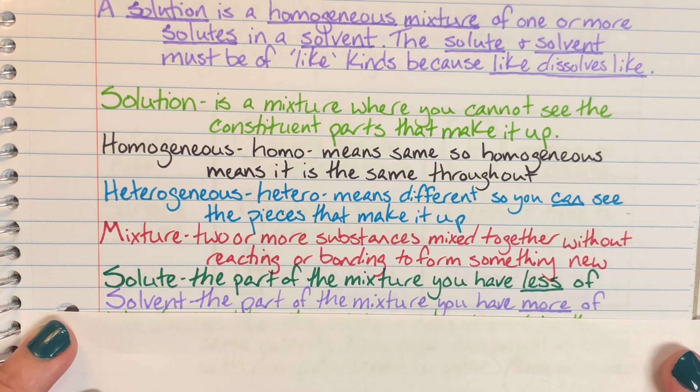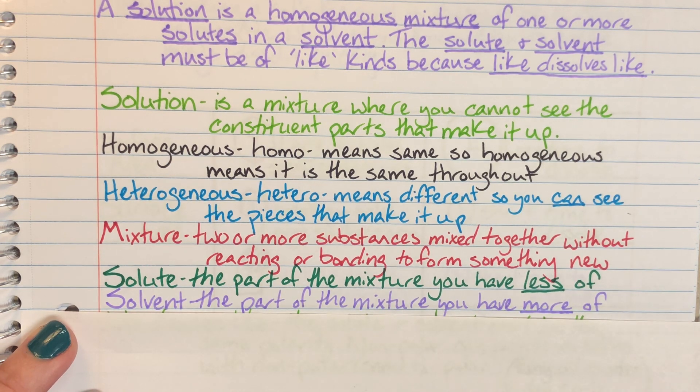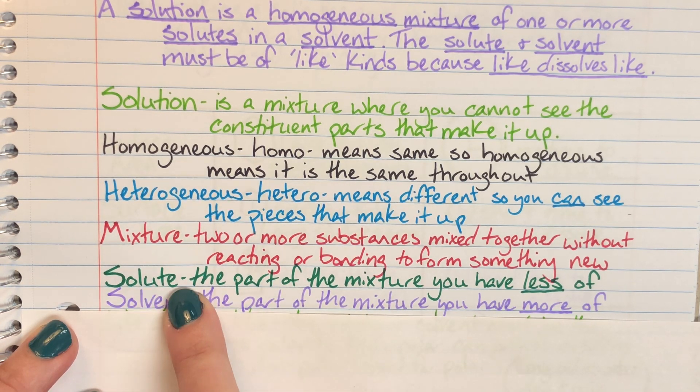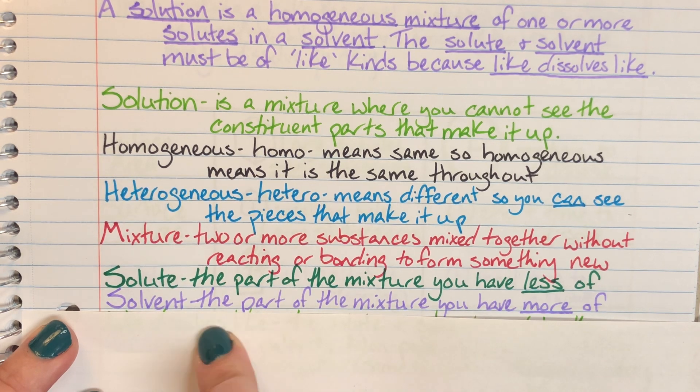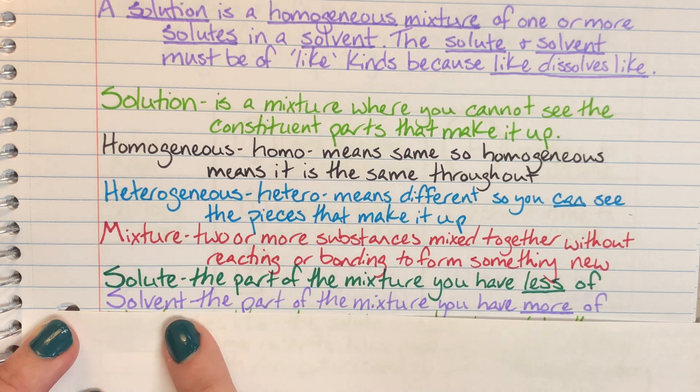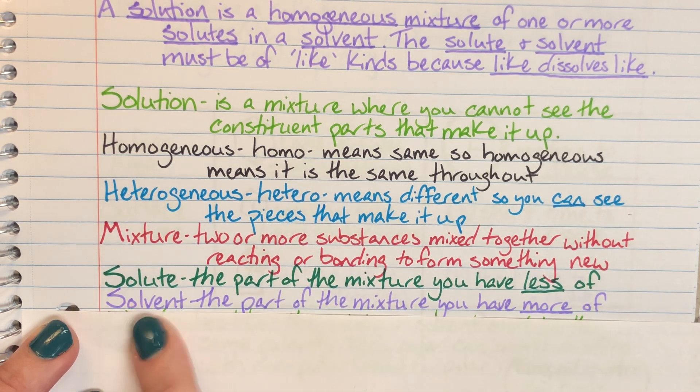And the solvent is going to be the part of my mixture that I have more of. Now the way that I like to remember the difference between solute and solvent is that solute has six letters whereas solvent has seven, and so solute is literally a smaller word, and solute is less than. It's the thing that I have less of than my solvent, which is a bigger word.